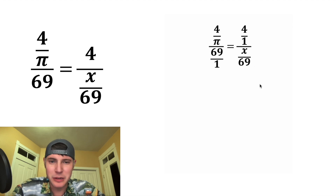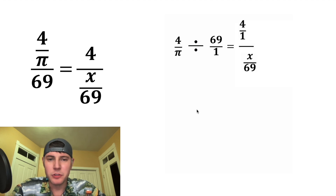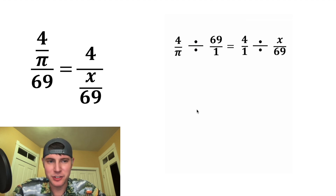Let's see if we can make a cool animation for that. It'll be four over pi divided by 69 over one, equals four over one divided by x over 69.